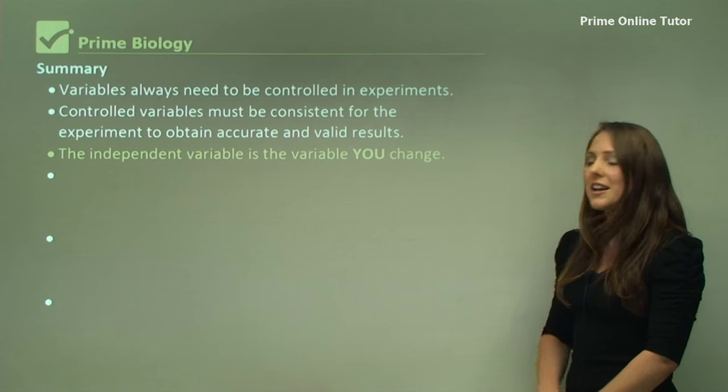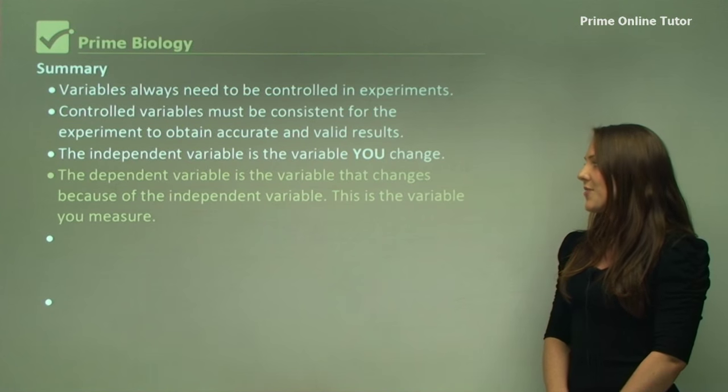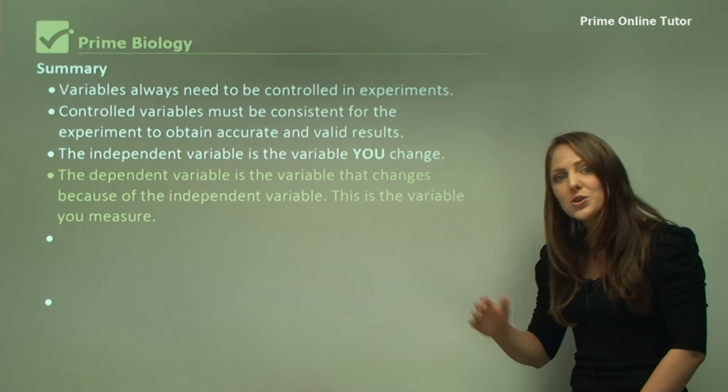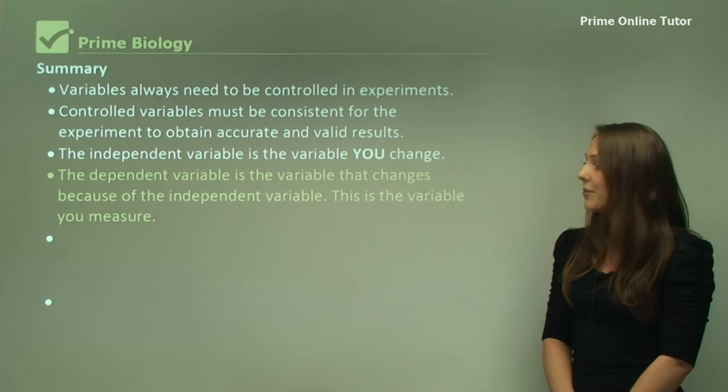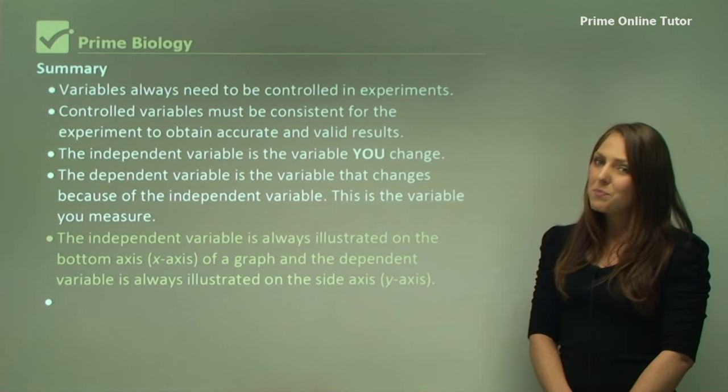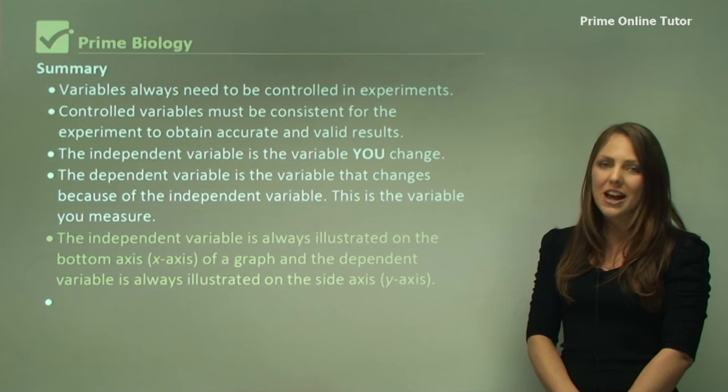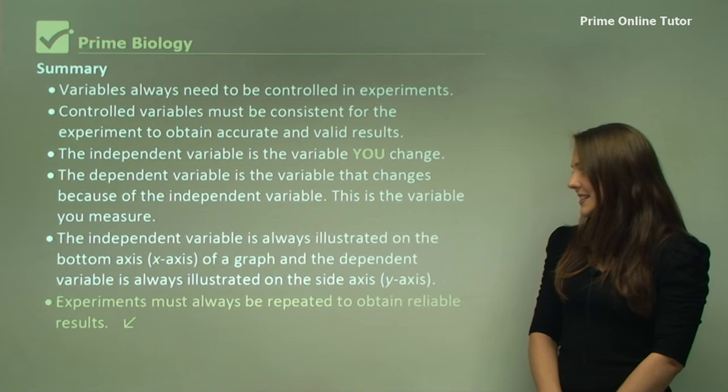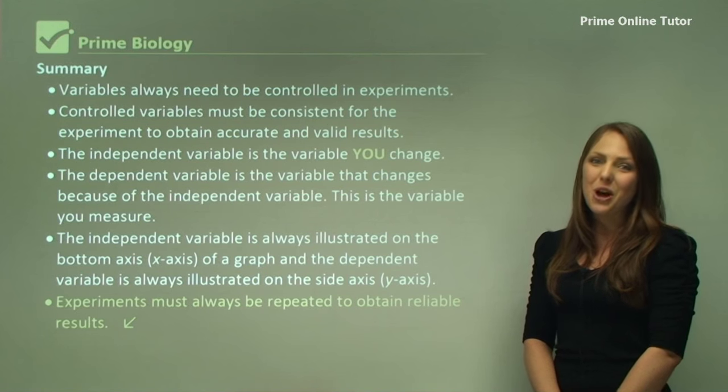The independent variable is the variable that you change. The dependent variable is the variable that changes because of the independent variable. This is the variable that you measure. The independent variable is always illustrated on the bottom x-axis of a graph and the dependent variable is always illustrated on the side y-axis. Experiments must always be repeated to obtain reliable results.